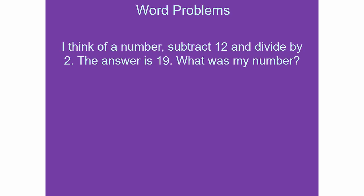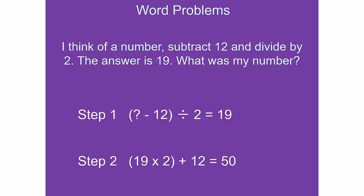Think of a number, subtract 12, and divide by 2. The answer is 19. What is the number? Set up the equation with X for the unknown, work through the steps, and solve — that gives you 50.